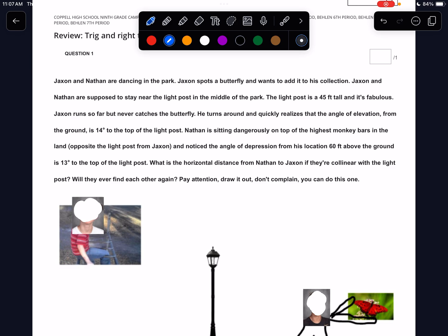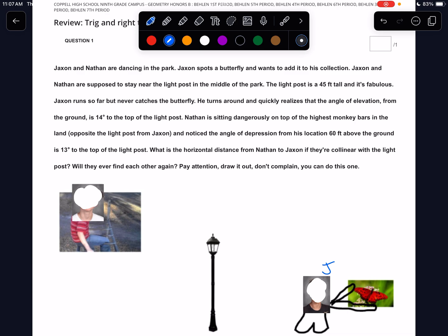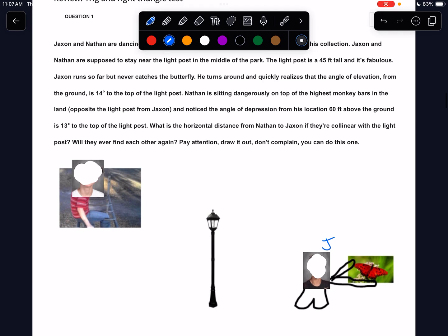It says Jackson and Nathan are dancing in the park. Jackson spots a butterfly and wants to add it to his collection. So this is Jackson down here. He's got the butterfly. Jackson and Nathan are supposed to stay near the light post in the middle of the park. The light post is 45 feet tall. Got it. And it's fabulous. Jackson runs so far, but never catches the butterfly. He turns around and quickly realizes that the angle of elevation from the ground is 14 degrees to the light post. So he has a 14 degree angle of elevation to the light post.